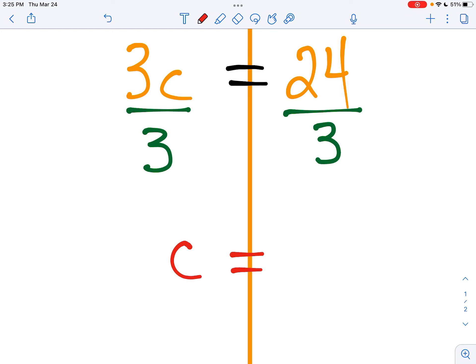That means that each C is 24 divided by three. And when I put that in my calculator, 24 divided by three, I get eight. C equals eight.